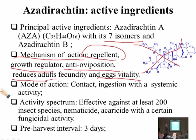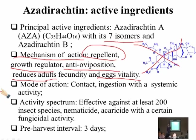Azadirachtin works by contact — when it touches the insect's cuticle it enters and causes effects. If ingested, the insect is affected even if it's a repellent, as some insects still eat. It also has a systemic effect — it can move through plant sap and affect insects feeding inside the plant. It has activity against at least 200 insect species, and also has nematicidal, acaricidal, and certain fungicidal activity. Pre-harvest interval is three days since it is a natural product.